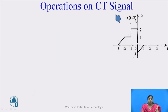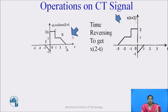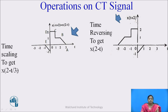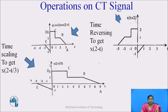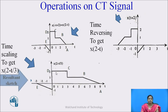Next we need the -t, so apply the time reversal property to get x(2 - t): take the mirror image of the signal about t = 0. Then apply time scaling to get x(2 - t/3); the time scaling factor is 1/3, so the signal is expanded by factor 3. Point a, initially at t = 3, moves to t = 3×3 = 9. Similarly, all points are expanded by factor 3. This is the required output resultant sketch.